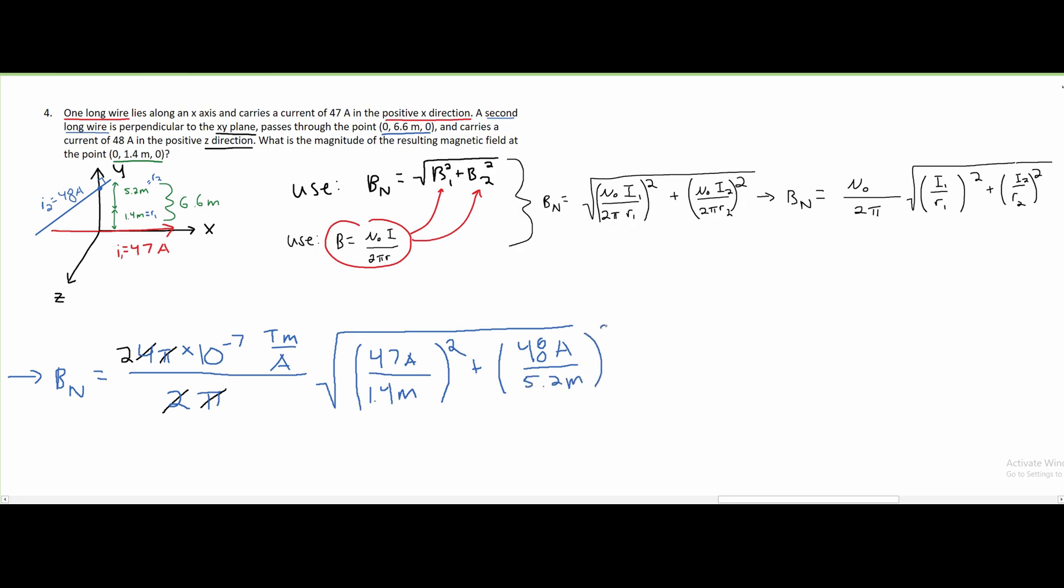After we carefully plug all of this into a calculator, we are going to get that our magnitude, B_N, is equal to approximately 7 teslas.